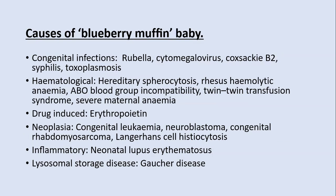There is a long list of causes of blueberry muffin babies. Congenital infections include rubella, cytomegalovirus, coxsackie B2, syphilis, and toxoplasmosis. Hematological conditions include hereditary spherocytosis, rhesus hemolytic anemia, ABO blood group incompatibility, twin-twin transfusion syndrome, and severe maternal anemia. Drug-induced causes include maternal erythropoietin use. Neoplasias include congenital leukemias, neuroblastomas, congenital rhabdomyosarcoma, and Langerhans cell histiocytosis. Inflammatory conditions include neonatal lupus erythematosus, and lysosomal storage diseases include Gaucher's disease.